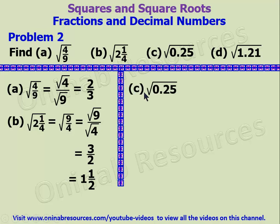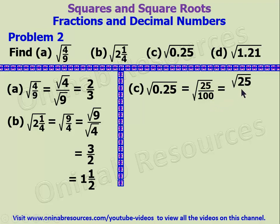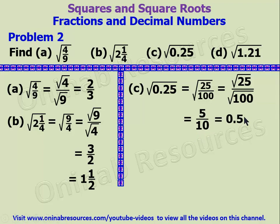We go to C: the square root of 0.25. The best way to do this is to change this to a fraction. So we have it as the square root of 25 over 100 — 0.25 has 2 decimal places, so it becomes 25 over 100. This gives the square root of 25 over the square root of 100. The square root of 25 is 5, over the square root of 100 which is 10. And 5 over 10 is 0.5.